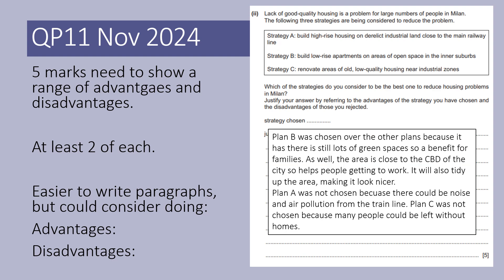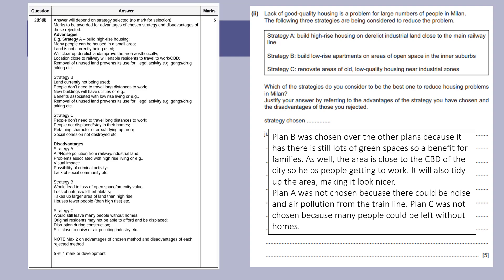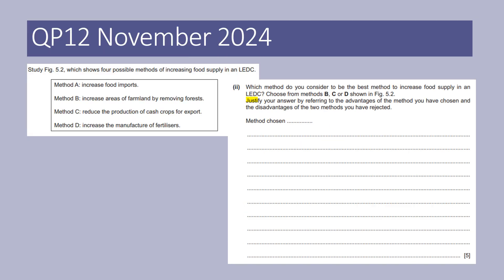Five marks needs to show a range of advantages and disadvantages — at least two of each. It's easier to write paragraphs, but you could also consider listing advantages with a colon, then disadvantages with a colon. I preferably go down the paragraph route. So Plan B was chosen — state that straight away. Look at the language: Plan B was chosen; Plan A was not chosen because; Plan C was not chosen because. It doesn't matter which one you pick — the mark scheme gives a wide range of points. For this next question, we can only choose from methods B, C, or D, and the task is to increase food supply in a poorer country. We need to plan possible strengths and weaknesses of each method in a table.